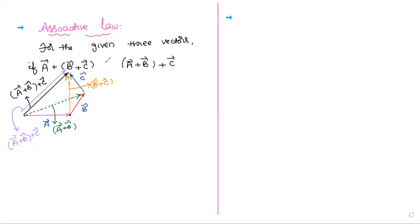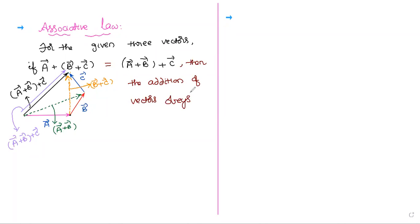Therefore, A-bar plus B-bar plus C-bar equals A-bar plus B-bar plus C-bar. If this condition is satisfied, then the addition of vectors obeys the associative law. This is called the associative law.